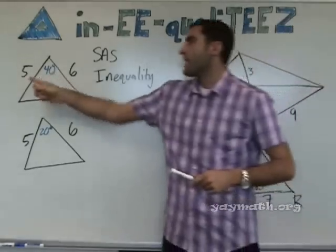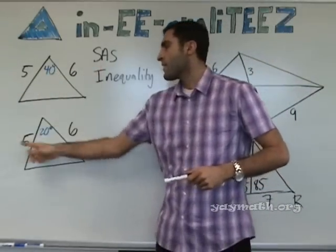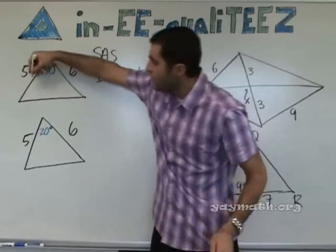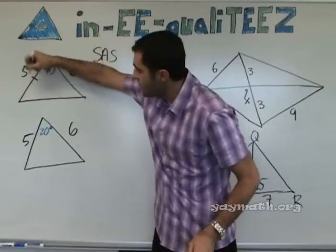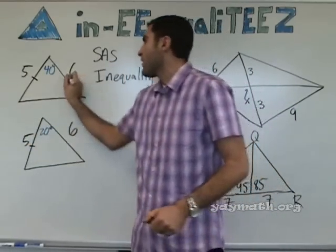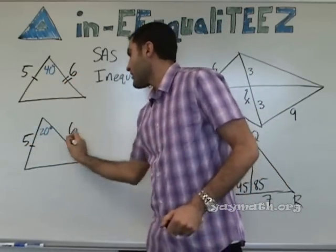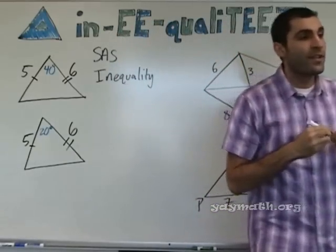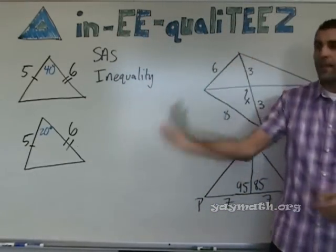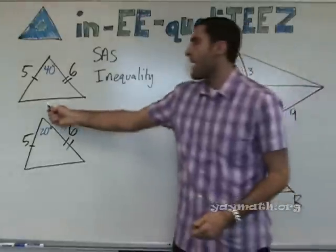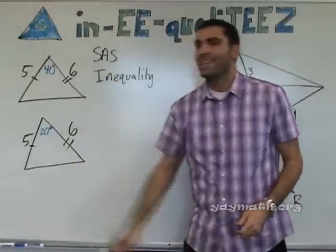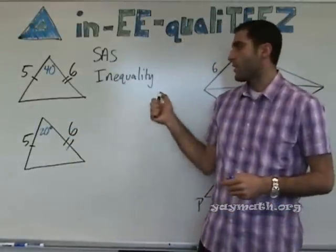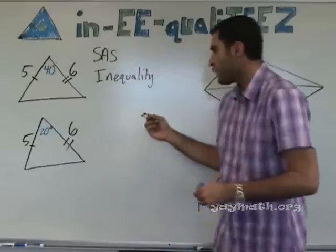So it's side, angle, side. The angle between the two congruent sides — you need two congruent sides and then the angle between them to be different. And then if the angle is different, then the side opposite it is different. So that's one of the rules.